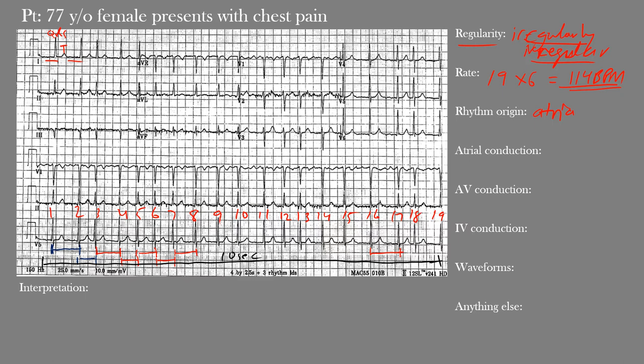For atrial conduction: we can't make out any P waves, and P waves represent atrial depolarization, so there is no clear atrial conduction here. For AV conduction: again, no clear P waves means there's no clear PR interval and no clear AV conduction. For intraventricular conduction: normal QRS duration is between 80 and 110 milliseconds, or about two to three small boxes. We can see narrow QRS complexes within normal limits — the QRS duration here is 84 milliseconds — so we have normal intraventricular conduction.